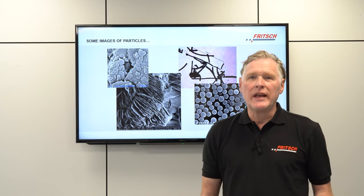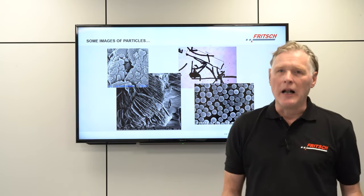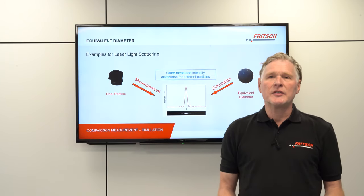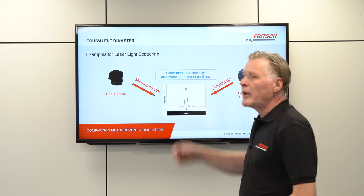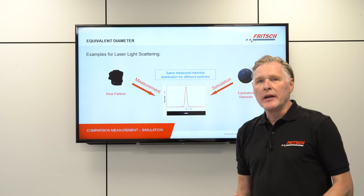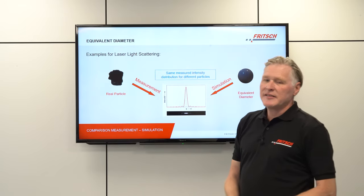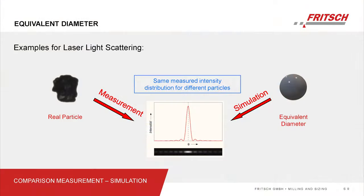Now let's look at what we actually get from our measurement. In laser diffraction, a real particle is illuminated by light and produces an intensity distribution as shown in the center of this image. We perform a simulation, trying to calculate a spherical particle that produces as nearly identical an intensity distribution as what was actually measured. The diameter of this sphere is what we call the equivalent diameter of laser diffraction.